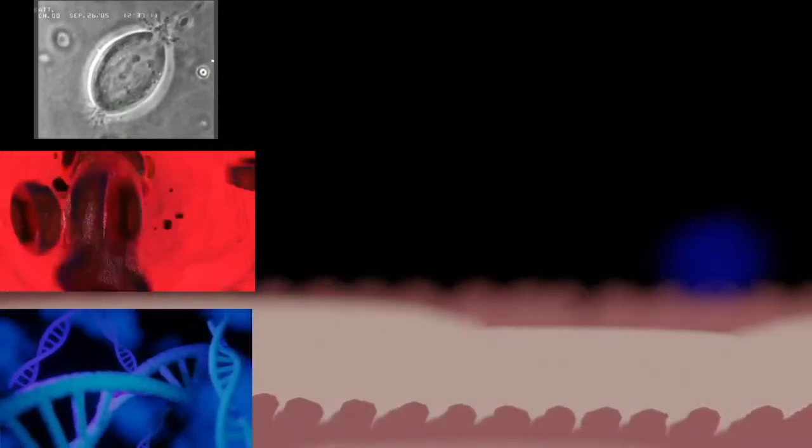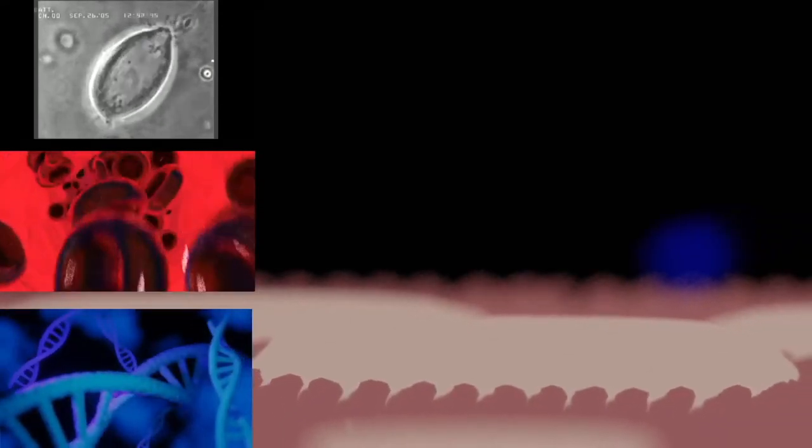However, the term mitosis is also used in a broad sense by some authors to refer to karyokinesis and cytokinesis together. Presently, equational division is more commonly used to refer to meiosis II, the part of meiosis most like mitosis.